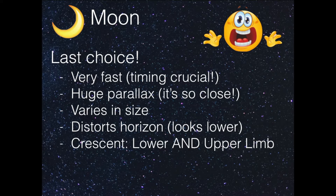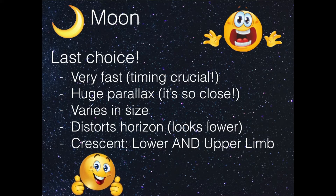And also the crescent — you can use the lower and the upper limb of the moon. Sometimes it's better to use the lower one, which is more practical like with the sun. And sometimes you have to use the upper one because the moon points in that direction. So many disadvantages, but one advantage: it is so often visible.